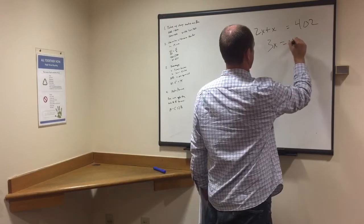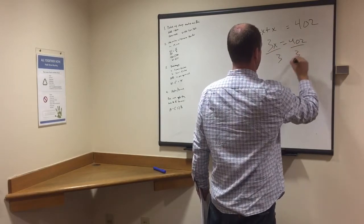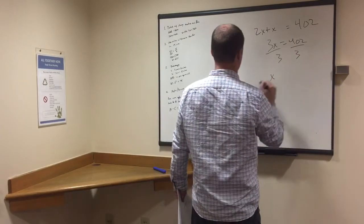So we have these together, 3x equals 402. We want to just solve for x first and then we'll worry about 2x. And x equals 168.